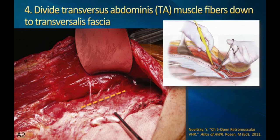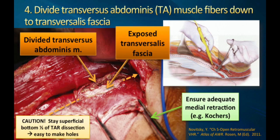While variations of TAR dissection have been described since its inception, a top-down approach provides the best anatomic landmarks and is easiest to understand, especially for those just starting to perform TARS. In the upper aspect, you've already done your retrorectus, identified your landmarks, and you're going to pick a spot half a centimeter to a centimeter medial to the linea semilunaris and start your dissection. You first divide that posterior lamella of the internal oblique, exposing transversus abdominis muscle fibers. The next step is to divide all the exposed muscle fibers all the way down to the transversalis fascia.